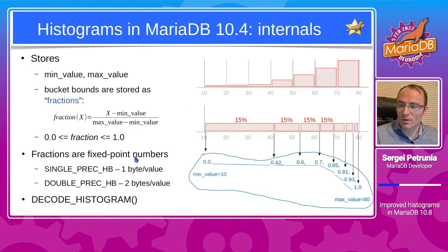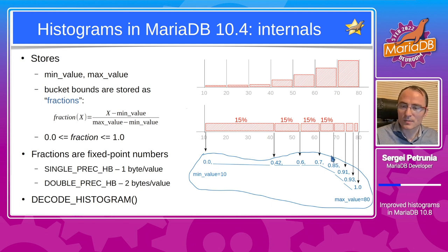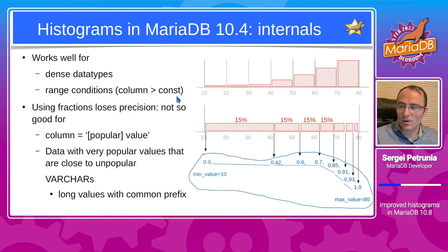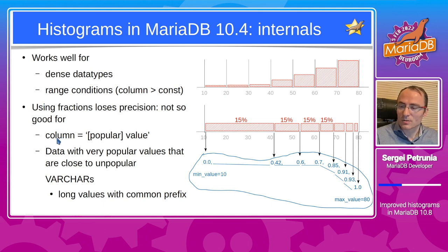Fractions are stored as fixed-point numbers and are smaller than values. There are two types of histograms in MariaDB: single precision, where the fraction is one byte, or double, where the fraction is two bytes — a very compact representation. You can use the decode_histogram function to display what histogram is collected. However, this compact format works well for dense data types and range conditions like column greater than or equal to a constant, but loses precision for estimating conditions like column equals a specific value.